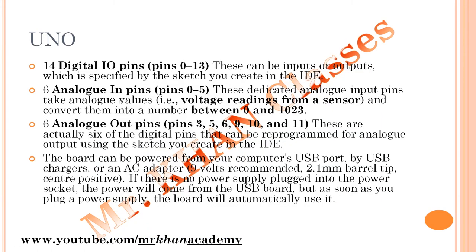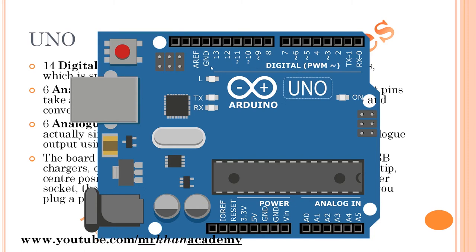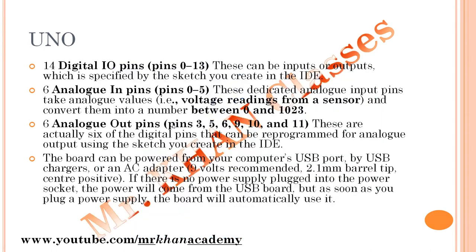The six analog input pins (A0 to A5) are dedicated analog inputs that take analog values like voltage readings from sensors and convert them into a number between 0 and 1023. There are also six analog output pins — these are digital pins marked with a tilde (~) symbol at pin numbers 3, 5, 6, 9, 10, and 11.